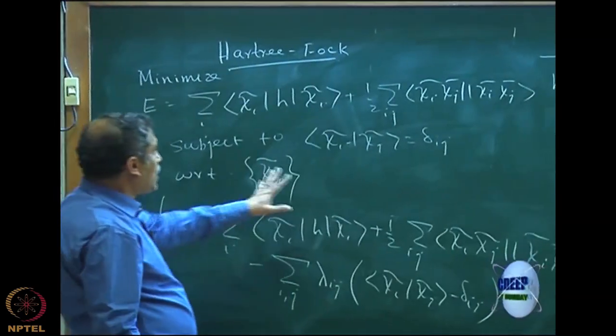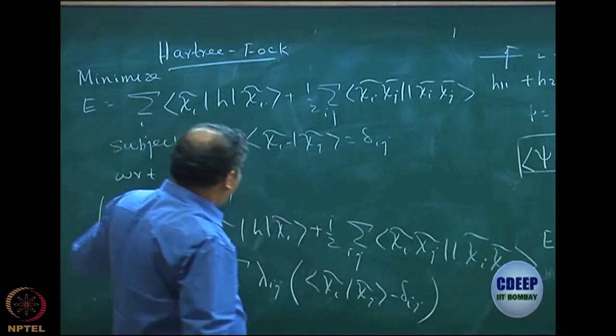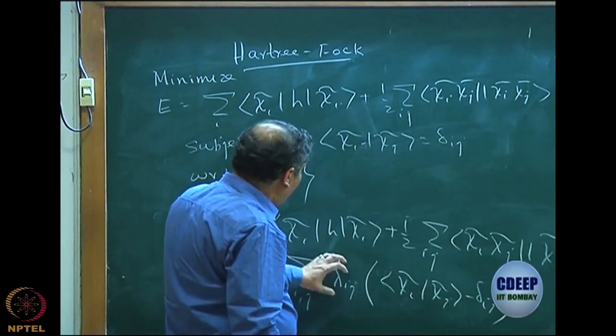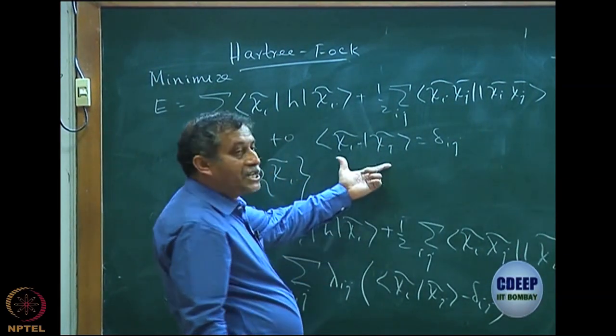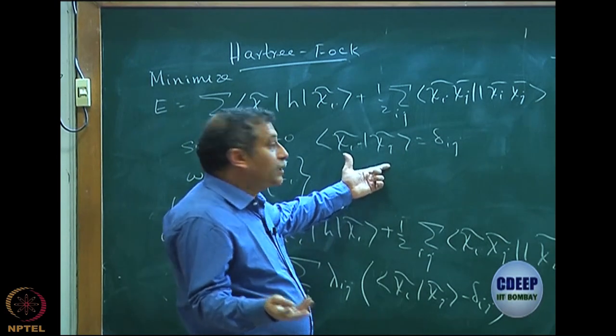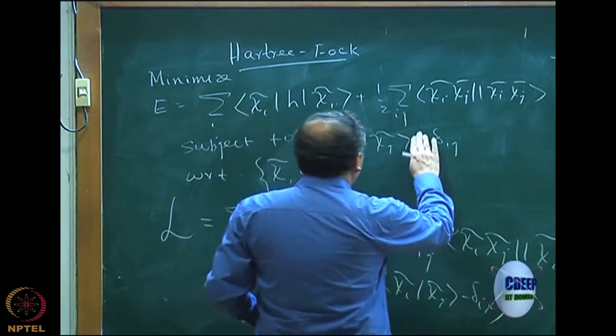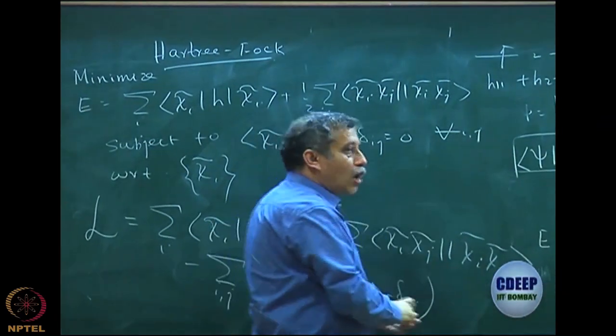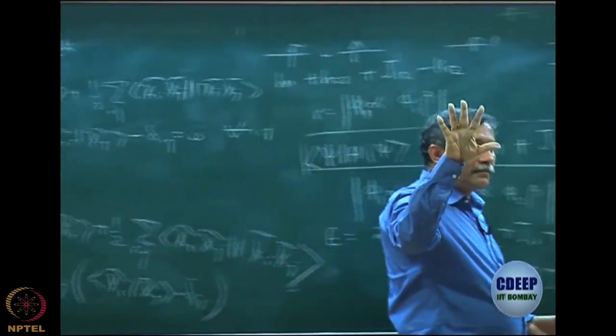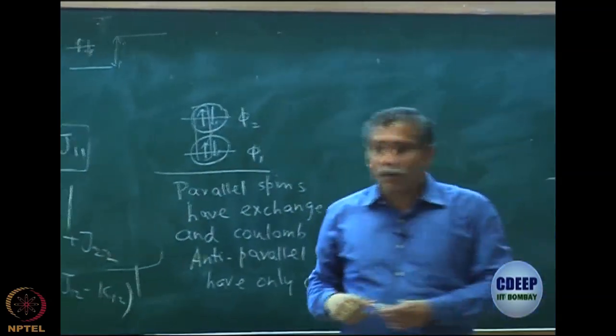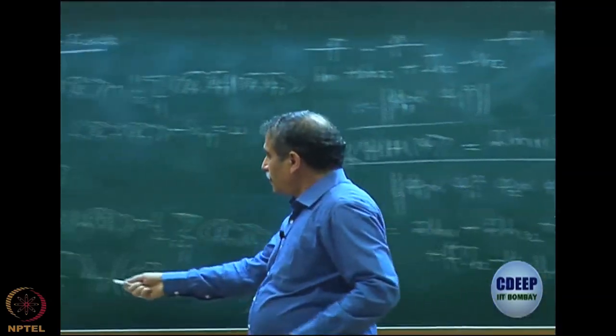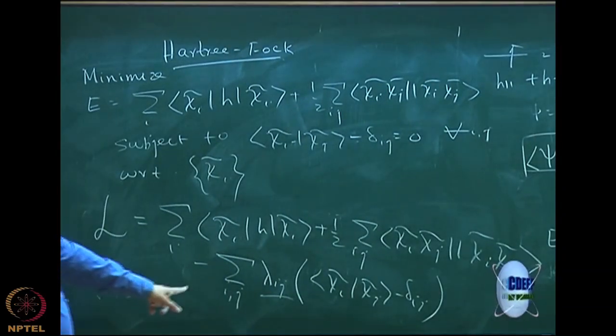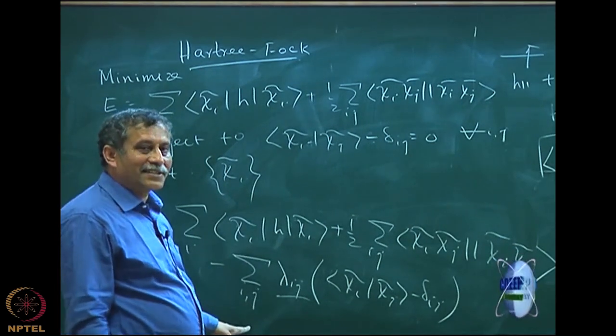Remember, the Lagrangians are always written that whatever is the function I am optimizing plus an undetermined multiplier times the condition such that the condition is equal to 0. So, what is my condition here? That this minus delta i j equal to 0 for all i j. So, how many conditions are there? n square, correct? All i j, remember. So, I will have for each of these one parameter. So, that is why I have n square parameter. I am summing over all of them. Is it clear, this Lagrangian function?